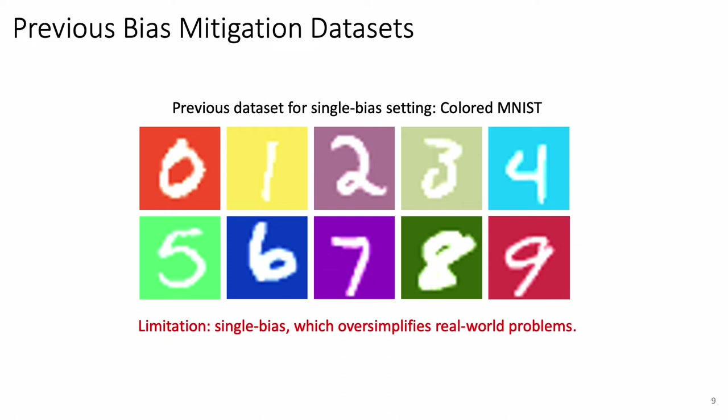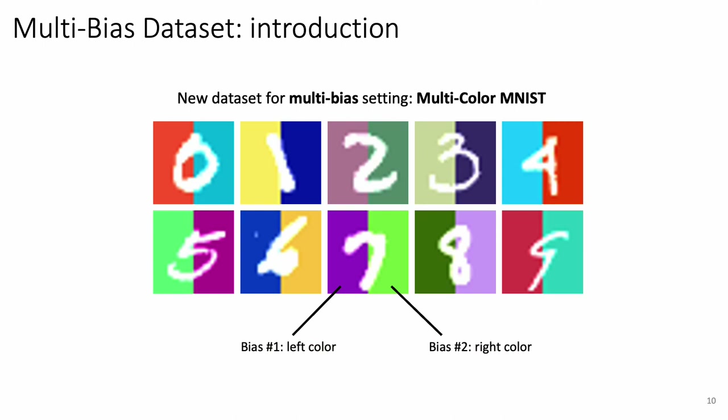In terms of benchmarking, most previous datasets have a common limitation: they contain only a single bias. For example, in the Colored MNIST dataset, it only contains the color bias. We regard this as an oversimplification of real-world datasets where multiple biases may exist. To better simulate real-world scenarios, we propose the Multicolor MNIST dataset to better benchmark mitigation of multiple biases. It contains two biases: left-color bias and right-color bias.